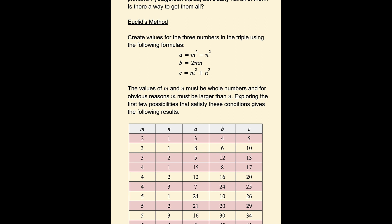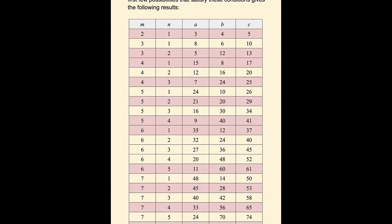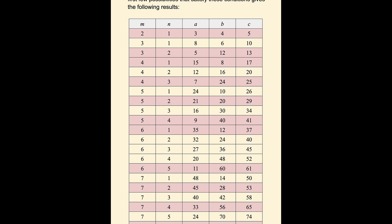Exploring the first few possibilities that satisfy these conditions gives the following results. So you can see the table here. We have a value of m of 2, a value of n of 1, and we get the 3, 4, 5 primitive Pythagorean triple.